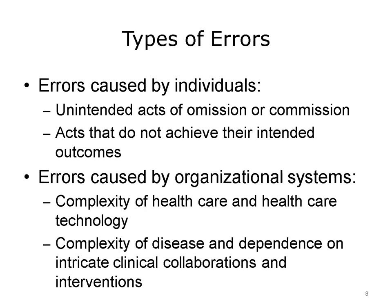There are two fundamentally different types of errors. The first are errors caused by individuals — these may be unintended acts of omission or acts of commission. An example of an act of omission is when a patient is transferred from one hospital unit to another and an important medication is left off the medication list. An example of an act of commission is when a medication intended for one patient is delivered to another. Individual errors can also be acts that don't achieve their intended outcomes, such as a misdiagnosis based on an error.